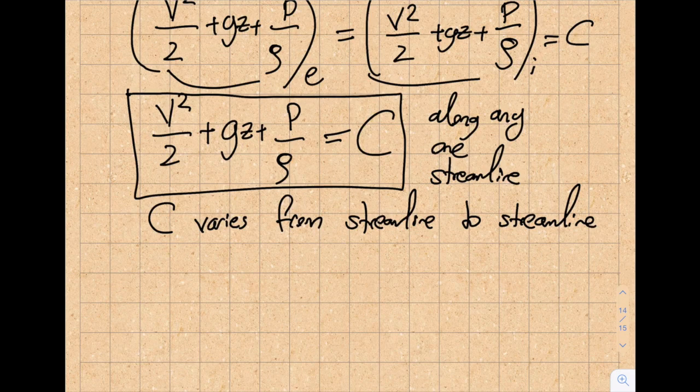It's important to note this is along any one streamline, not across different streamlines. The constant C varies from streamline to streamline — for instance, C could be 1, 2, 5, or 10 among different streamlines. The approach I took originated from conservation of energy, but this can also be derived from Newton's second law, i.e., conservation of momentum.